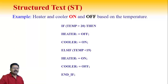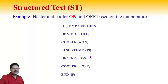Here is one example: a heater and cooler turned on and off based on temperature. When the temperature is higher than 20 degrees Celsius, the heater is OFF and the cooler is ON. ELSE IF, when the temperature is less than 90 degrees Celsius, the heater is ON and the cooler is OFF. This is very similar to C programming and more understandable than Instruction List.